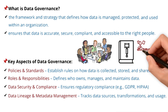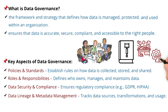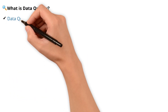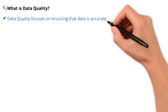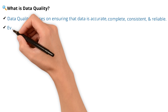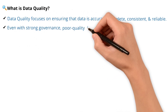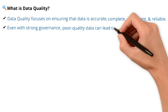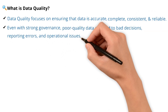Think of data governance as the rulebook for managing data — just like how government governance ensures structure and order in a society. Without it, data can become disorganized, unreliable, and non-compliant. Now, data quality: data quality ensures that data is accurate, complete, consistent, and reliable. Even with strong governance, poor quality data can lead to bad decisions, reporting errors, and operational issues.